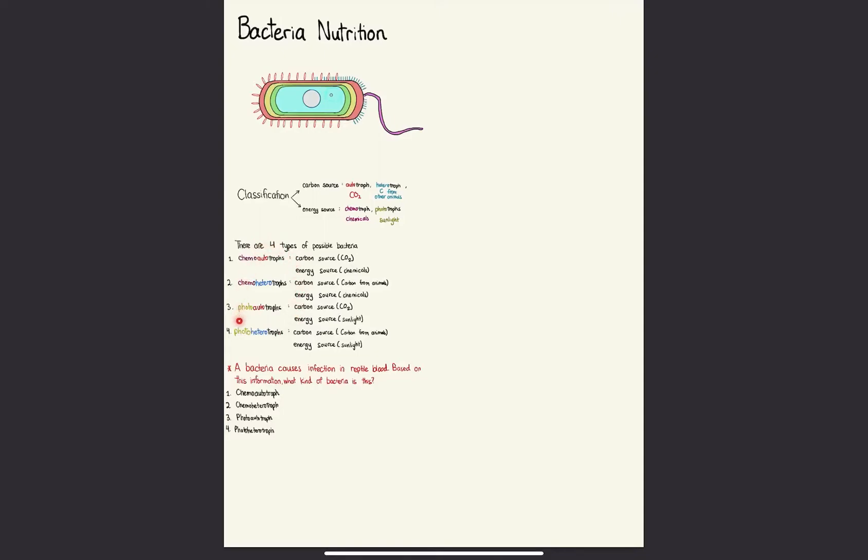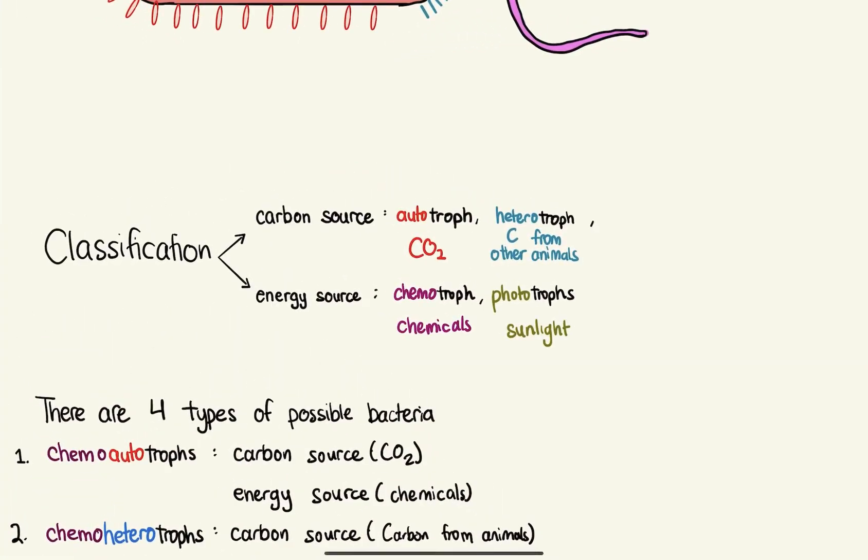Once you break this down into understanding the two factors that we use to classify the bacteria, it'll be very easy to understand. So let's get into it. There are two factors that allow us to determine or classify the bacteria's nutrition source. First is its carbon source, and the second is its energy source.